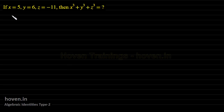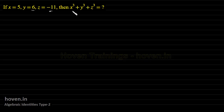Let us start with some more questions on algebraic identities of type 2. In this question, x is 5, y is 6, z is minus 11. Then what is x cube plus y cube plus z cube?